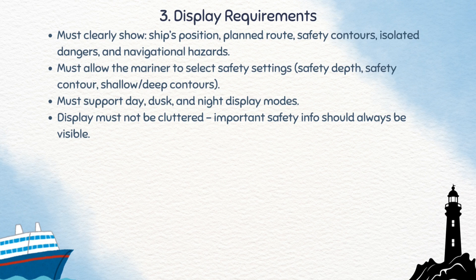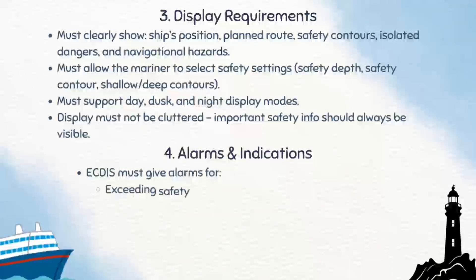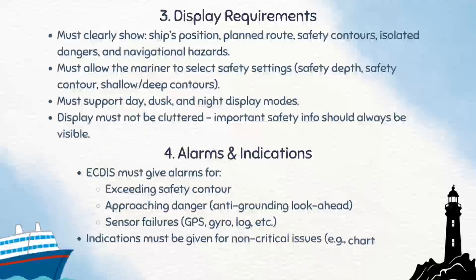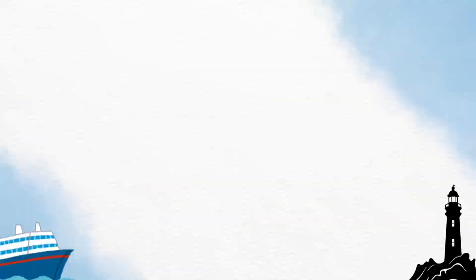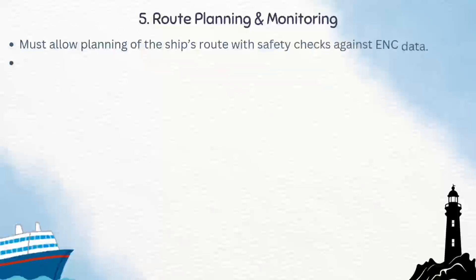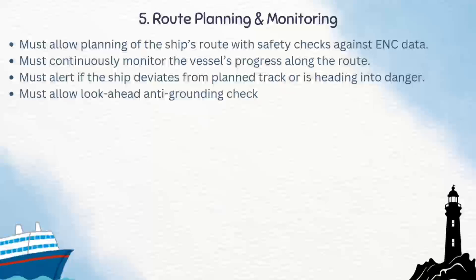It must allow the navigator to set safety settings, and should support day, dusk, and night display modes. It must avoid clutter and always show important safety information. Fourth, alarm and indication: it must provide alarms for safety contour breaches, danger ahead, and sensor failure, and must provide indications for non-critical issues. Fifth, route planning and monitoring: it must allow safe route planning, continuously monitor the vessel's progress, alert for deviation and dangers, and provide look-ahead and anti-grounding checks.